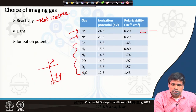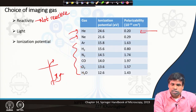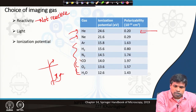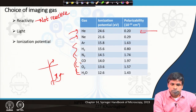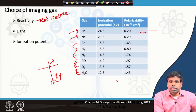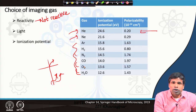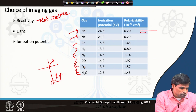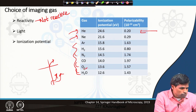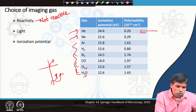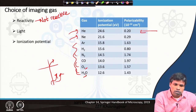Even though we use helium or neon, there will be trace-level or parts-per-million level contaminant gases. If these contaminant gases — such as oxygen, water, or nitrogen — are present along with helium or neon, they will get ionized first because they have lower ionization potentials. These reactive contaminants can react with the surface atoms of the specimen and also change the shape of the tip; for example, oxygen can react with the tungsten tip to form oxide, which changes the field distribution and beam current.